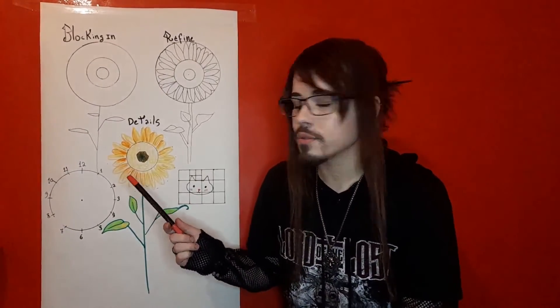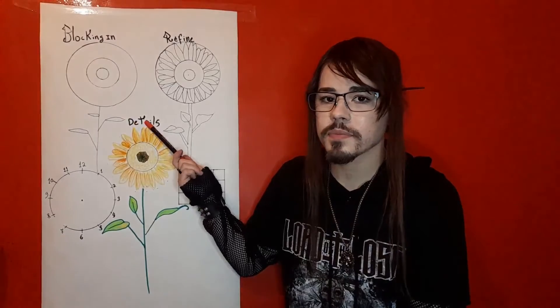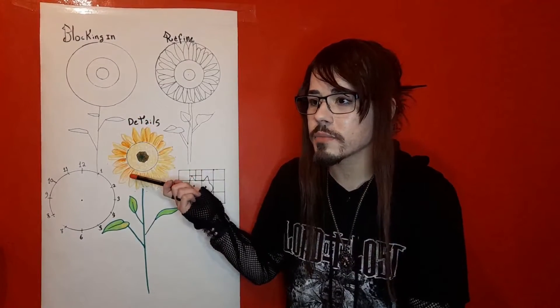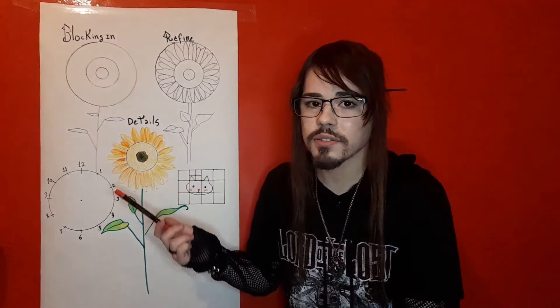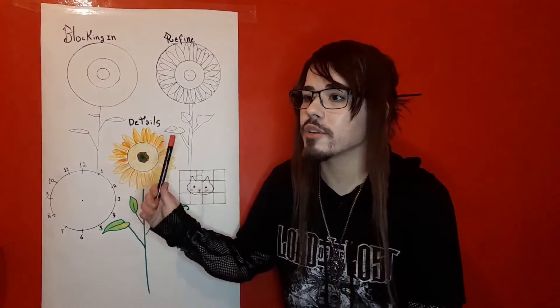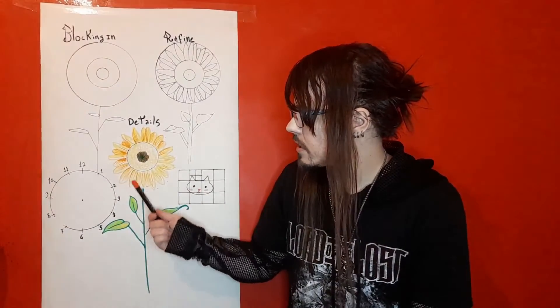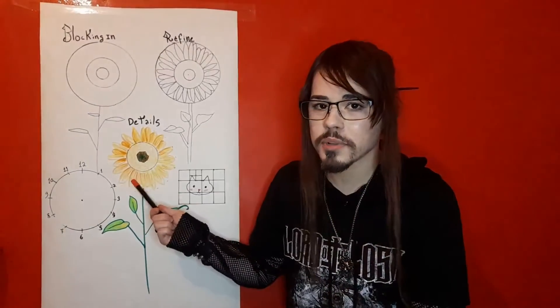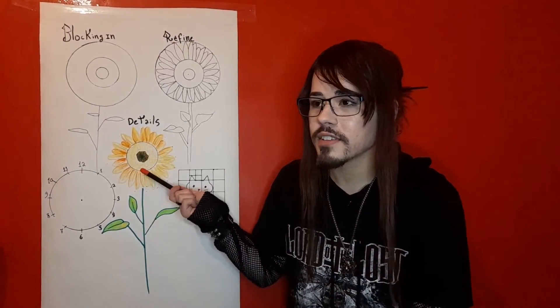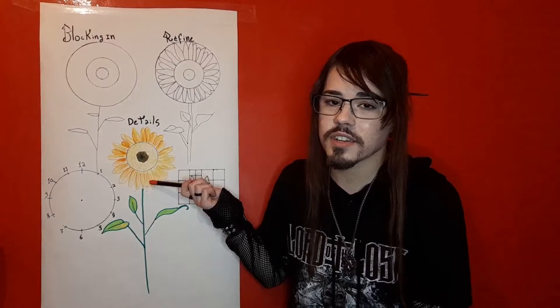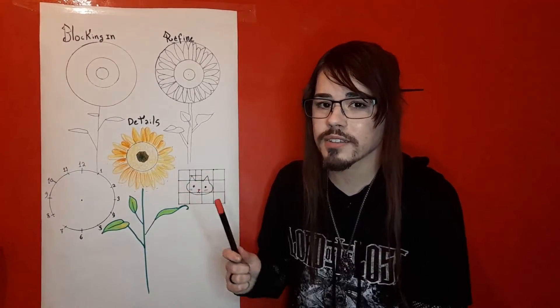This leads us to our third phase, which is details. You can actually color it from now, you can line it with a proper pen, and then erase the sketch. Everything should be in its place now. Obviously, it should be better than this, this is just an example, but with a lot of practice you'll see.